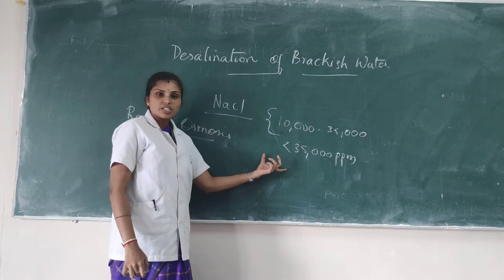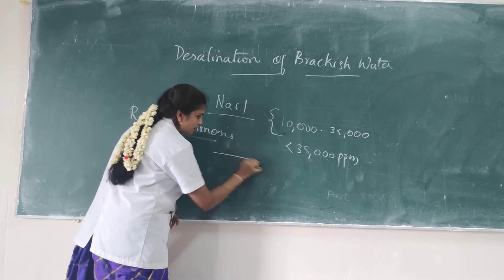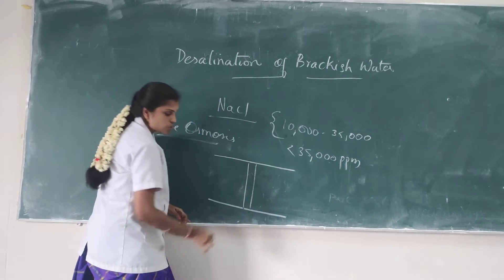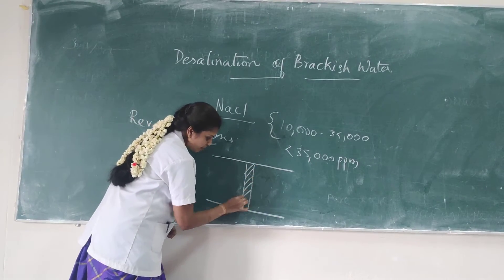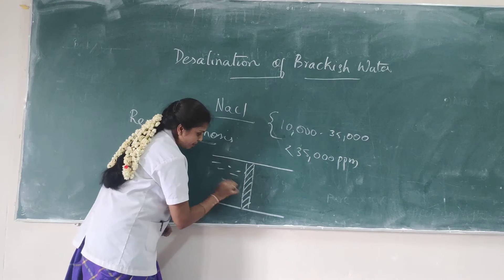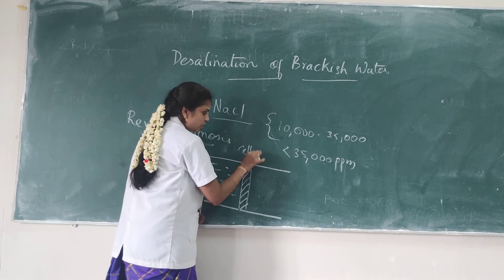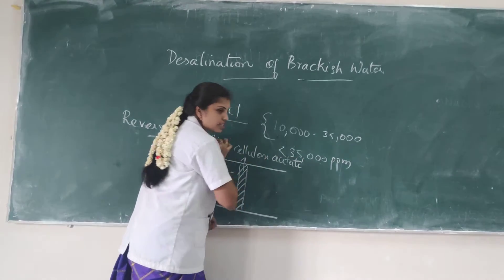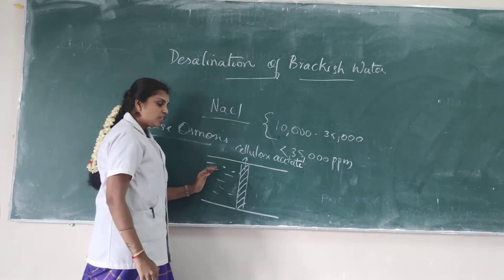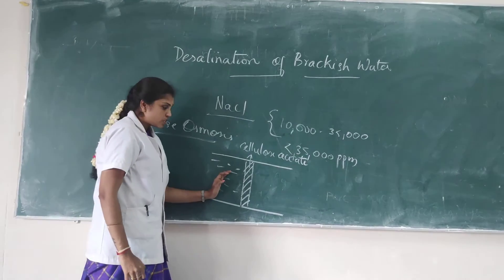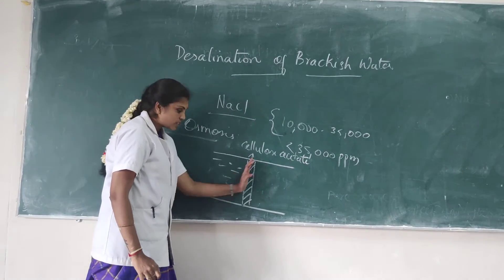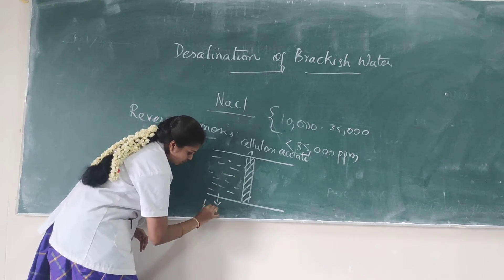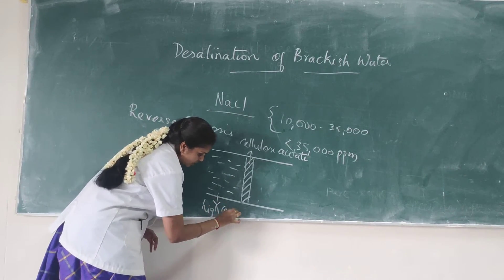When two different concentrated solutions are separated by a semi-permeable membrane, that semi-permeable membrane is generally cellulose acetate, which is a polymer. It will allow only the dilute solution to penetrate through this semi-permeable membrane. So it is separated into a highly concentrated side solution and a less concentrated side solution.